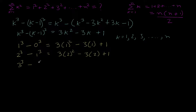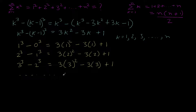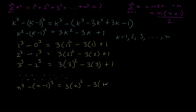Continuing: for k=3, we have 3³ − 2³ = 3(3²) − 3(3) + 1. If you keep on doing this until the nth term, for k=n we will have n³ − (n−1)³ = 3n² − 3n + 1.